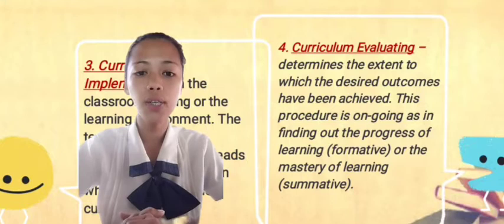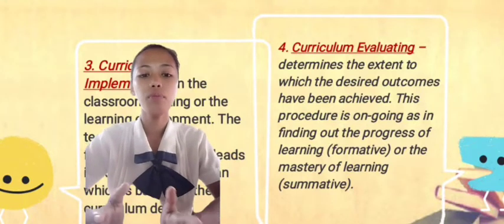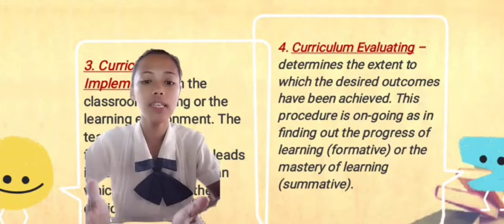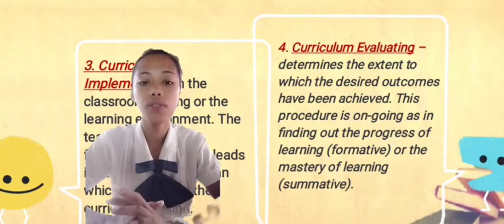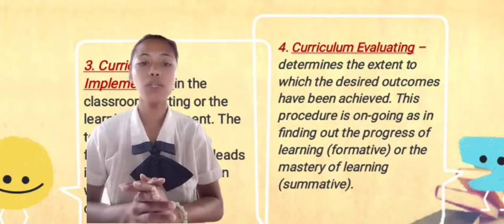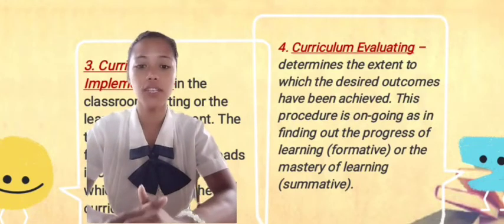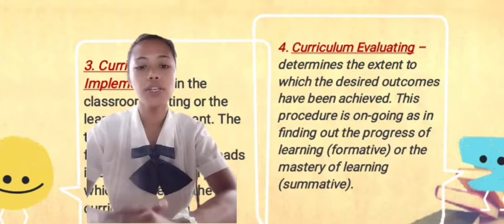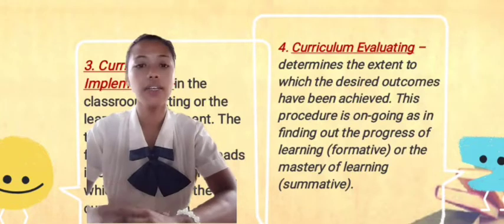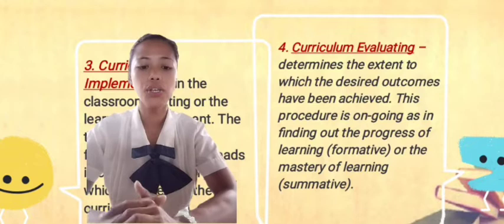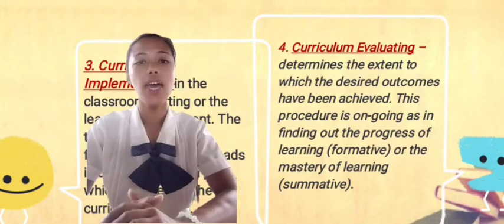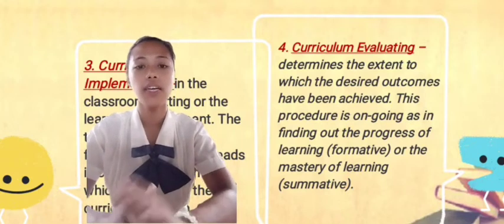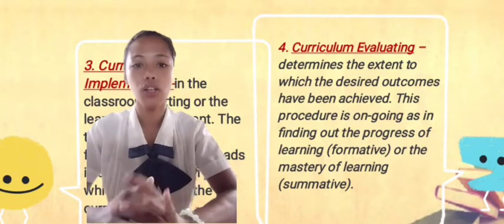The last phase is curriculum evaluating. Curriculum evaluating determines the extent to which the desired outcomes have been achieved. This procedure is ongoing — finding out the progress of learning (formative) or mastery of learning (summative). Along the way, evaluation will determine the factors that have hindered or supported implementation, and will pinpoint where improvements can be made and corrective measures introduced. The result of evaluation is very important for decision-making of curriculum planners and implementers. Furthermore, evaluation helps build educational programs, assess achievements, and improve effectiveness. It plays an enormous role in the teaching-learning process, helping both teachers and learners improve.